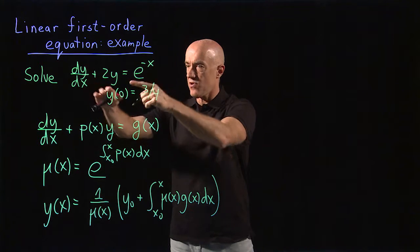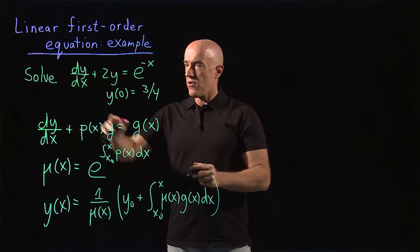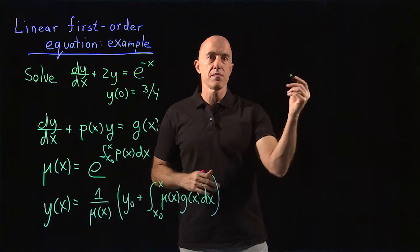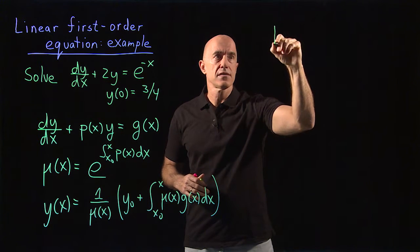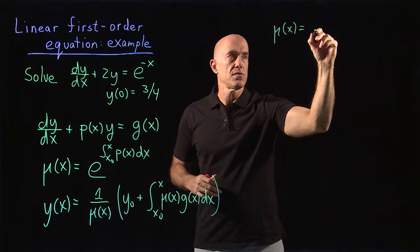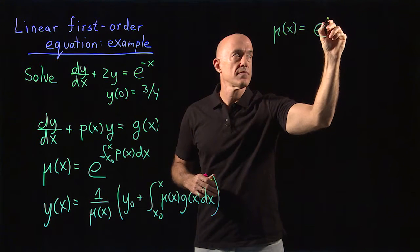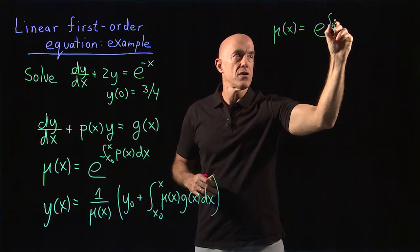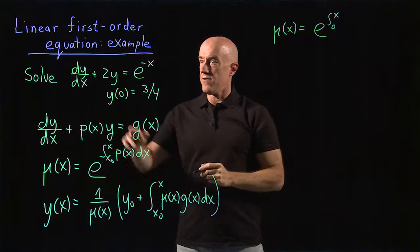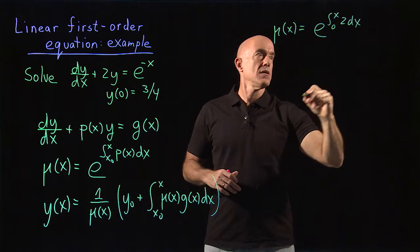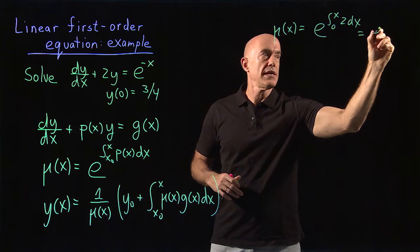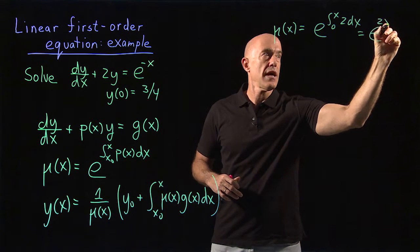So we just apply this formula here. Our p is 2, so we compute the integrating factor. So μ(x) is equal to e to the integral from 0 to x of 2dx. That's just equal to e^(2x).